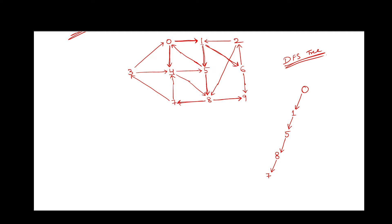From 7, there are two outgoing edges which go to vertex 3 and vertex 4. We will be taking vertex 3. From 3, there are again two outgoing edges to 0 and to 4. As 0 is an explored vertex, we will be going to 4. From 4, there are two outgoing edges which go to vertex 5 and vertex 8, but vertex 5 and 8 are already visited.